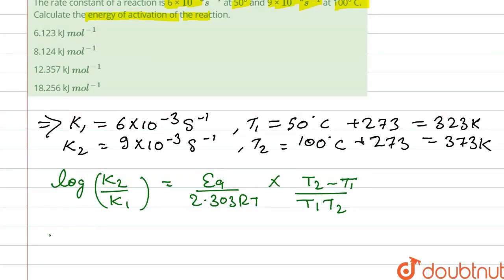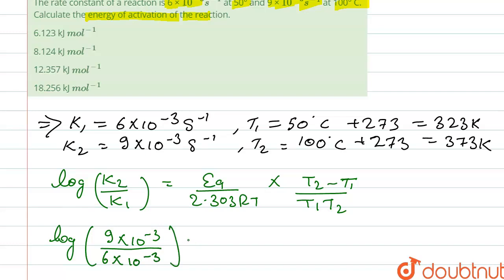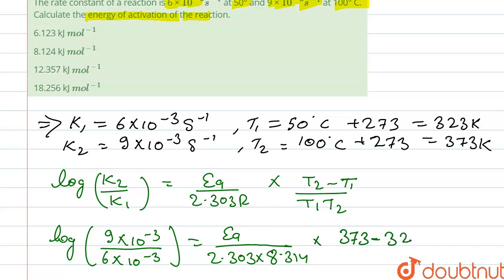Substituting the values: log of (9 into 10 to the power minus 3) divided by (6 into 10 to the power minus 3) is equal to Ea upon 2.303 into R, that is 8.314, into (T2 minus T1), which is 373 minus 323, upon T1 times T2, that is 373 into 323.